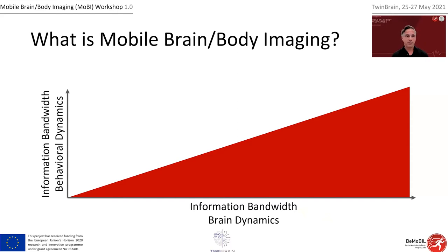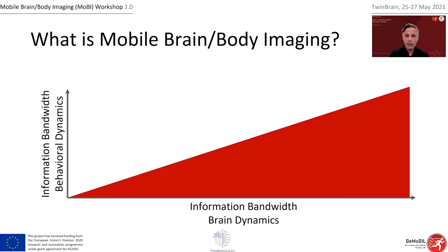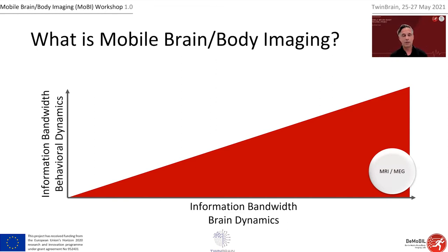Mobile brain body imaging, in that sense, is a method to record and analyze brain and behavioral dynamics in the lab but also in more naturalistic conditions, even outside the lab. It's a method to investigate a wide range of scientific questions analyzing human brain dynamics in combination with information derived from behavior. It's an integrative approach — we want to include movement and behavioral aspects with EEG to understand the relationship between cognition, brain dynamics, and behavioral dynamics.